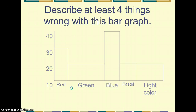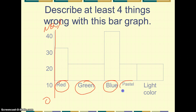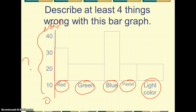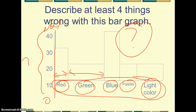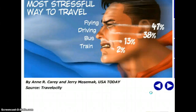Let's think about four things wrong with this bar graph. First, it doesn't start at zero, and we don't know the maximum, so it's not to scale. Second, colors are represented in a way that suggests some sort of ordinal value, but we don't know what the axis represents — percentages, frequency, or something else. Third, the bars have different widths with inconsistent spacing. Fourth, the color categories overlap — 'pastel' could be blue pastel, green pastel, or red pastel, and could also mean 'light color,' so they're not mutually exclusive or collectively exhaustive.